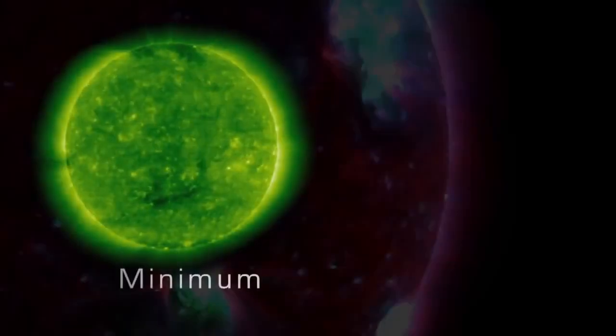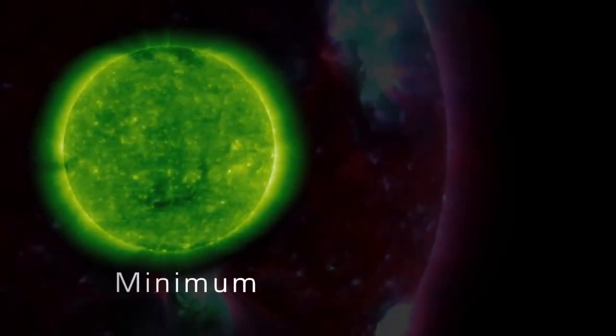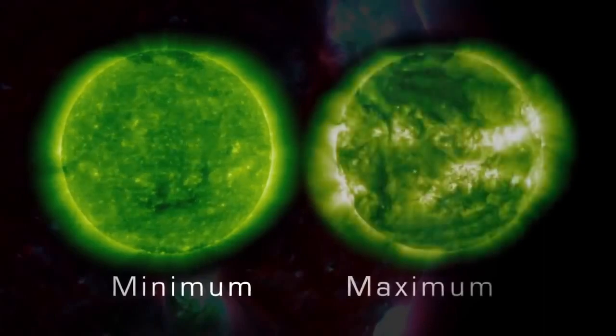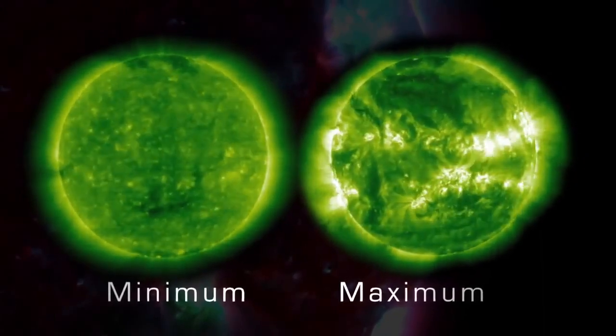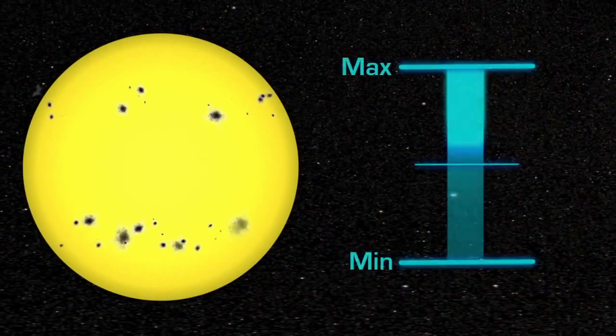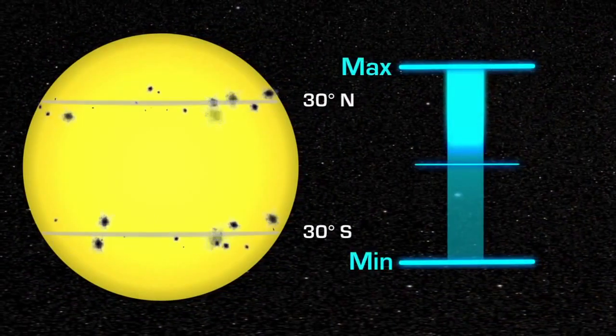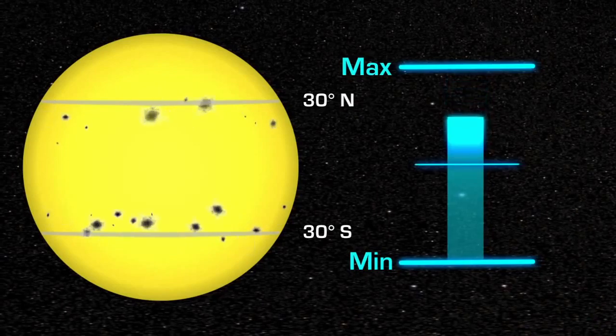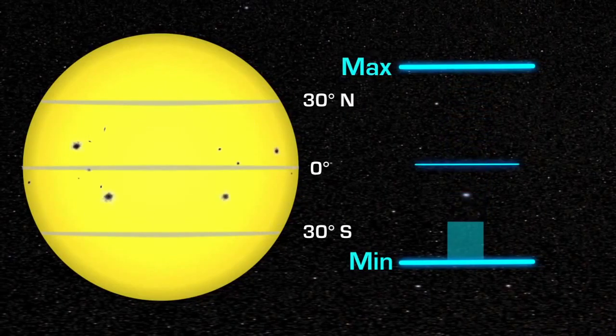Solar minimum represents a period of time when sunspot numbers are relatively low, and solar maximum represents a period when sunspot numbers are relatively high. During this cycle, the location of the sunspots also changes. They are at middle latitudes during solar maximum and move closer to the equator as the Sun approaches solar minimum.